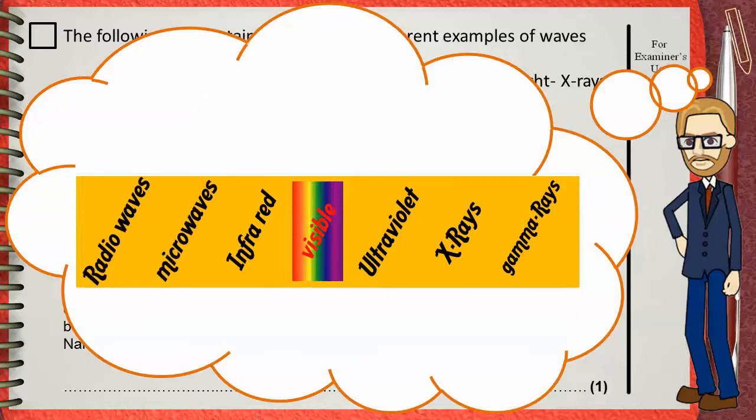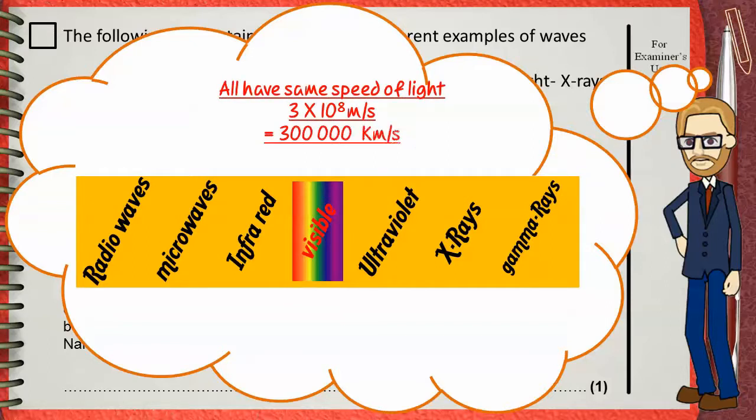These are the parts of electromagnetic spectrum that we have studied in our lesson. All these waves have the same speed of light in vacuum, which is 3 times 10 power 8 meters per second. This also equals 300,000 kilometers per second. As you go from radio to gamma, the frequency increases.